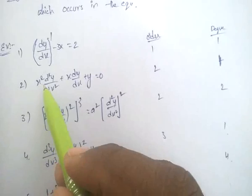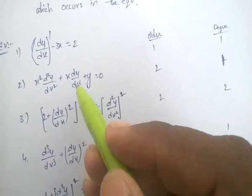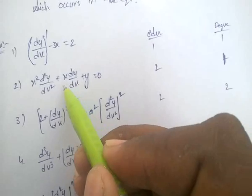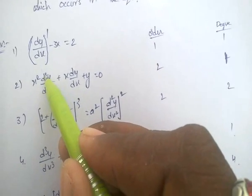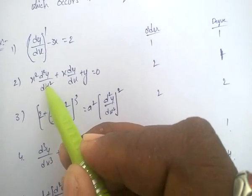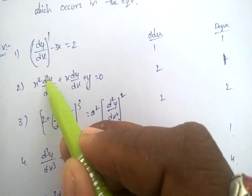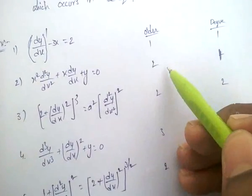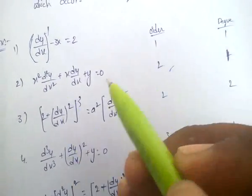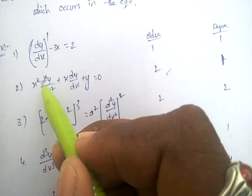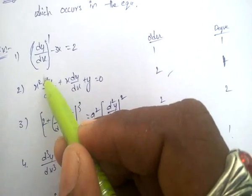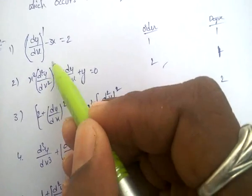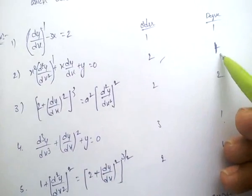Second example: in this equation, what is the highest derivative? The highest derivative is d²y/dx². The power of d is 2, so order is 2. What is the degree? The power of the highest derivative is 1. So degree is 1.